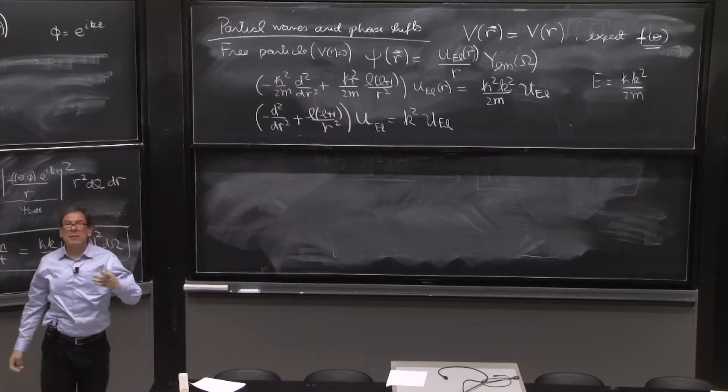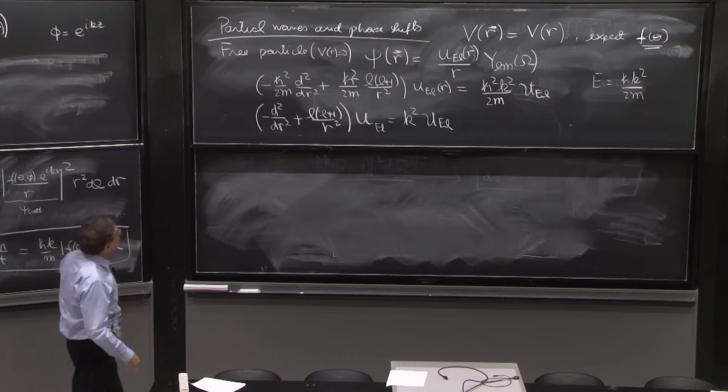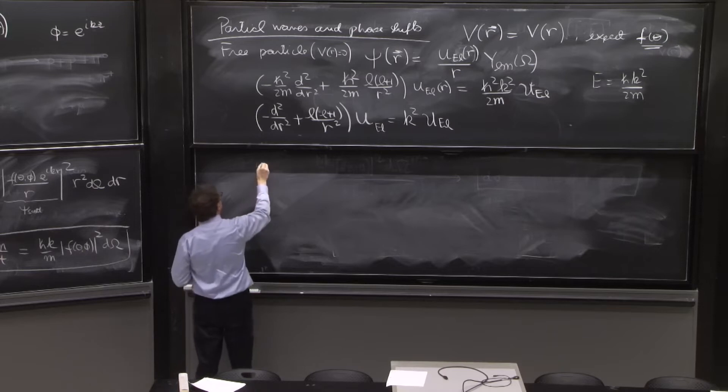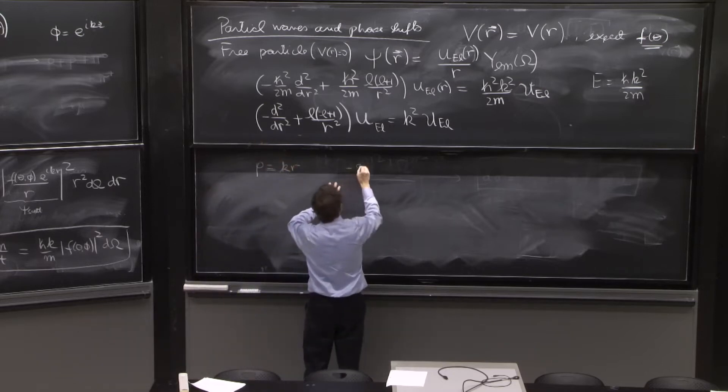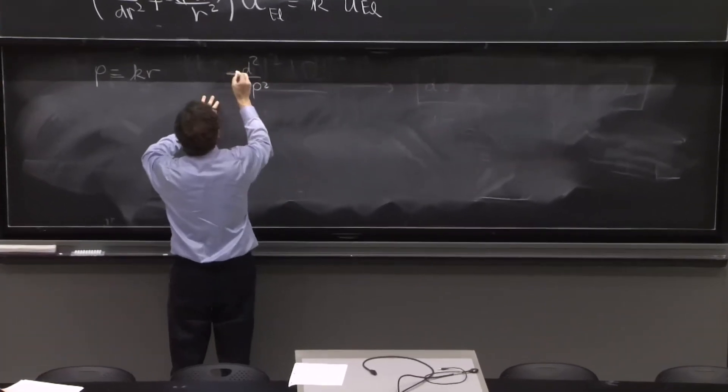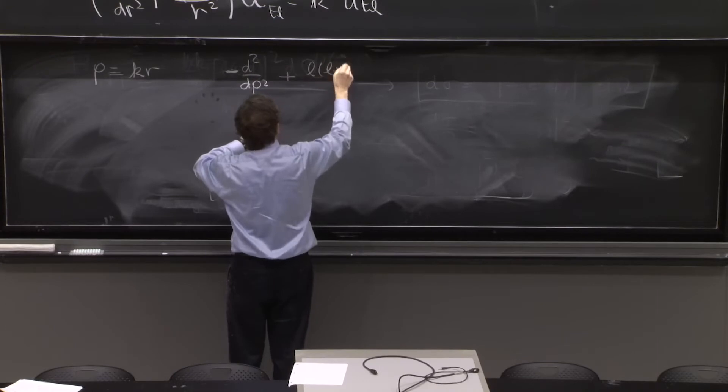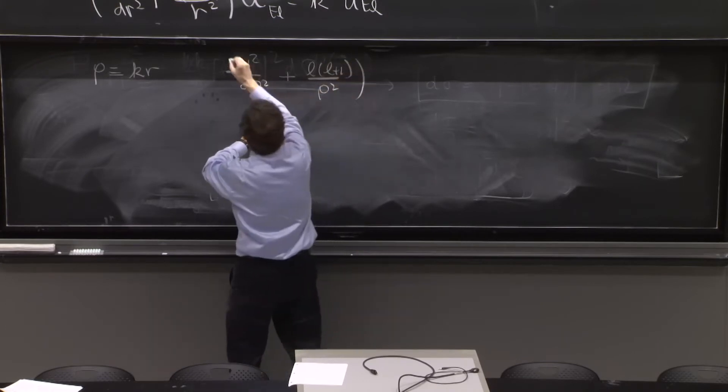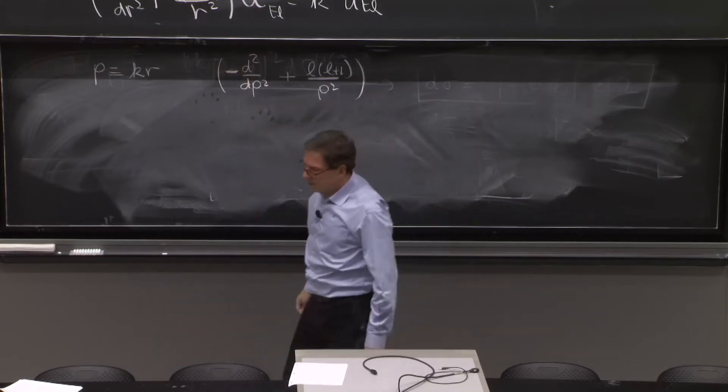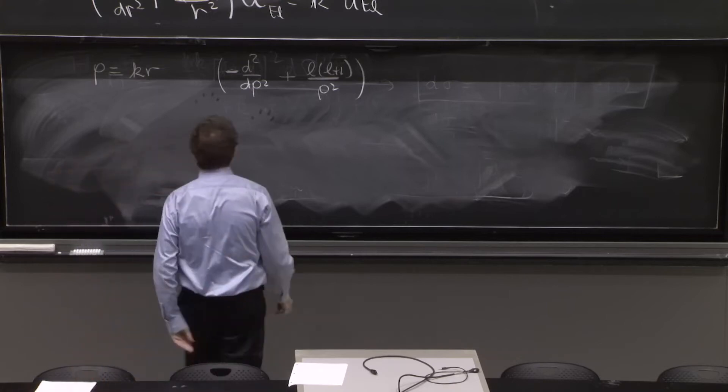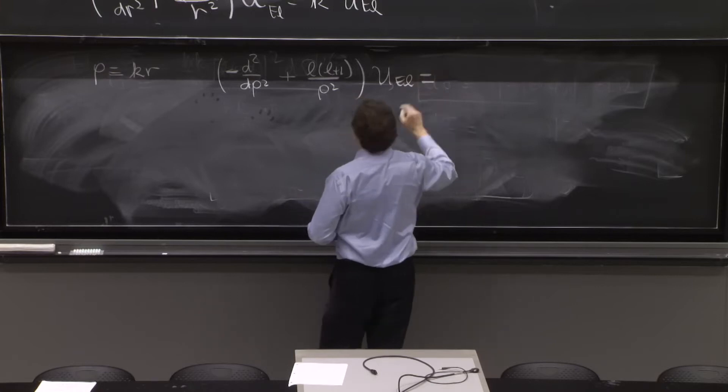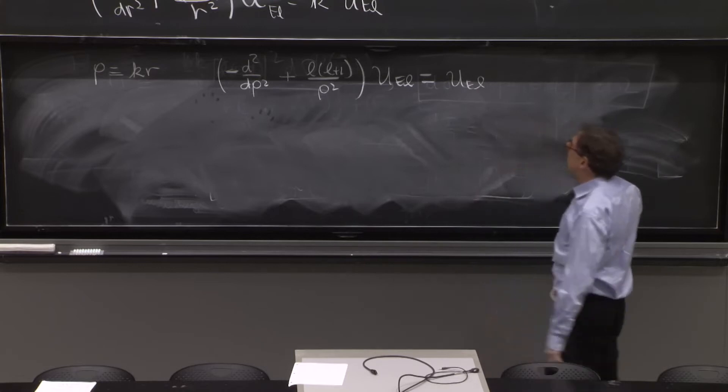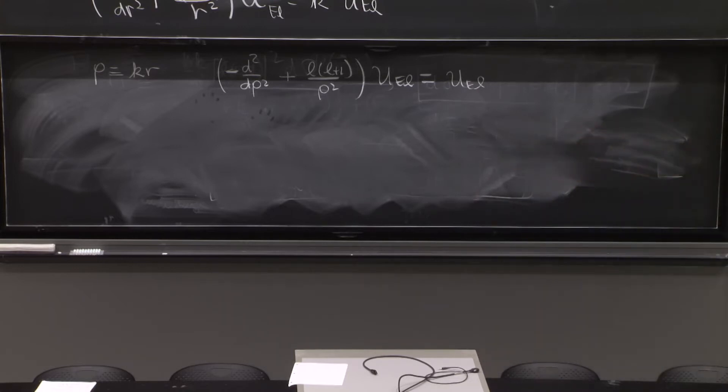This is an r squared here. And the reason you can see, one reason, at least analytically, that there's no quantization is that you can define a new variable, rho equal kr. And then this whole differential equation becomes minus d second d rho squared, plus l times l plus 1 over rho squared, u_el is equal to u_el. And the k squared disappeared completely. That tells you that the k squared cannot get quantized. If there is a solution of this differential equation, it holds for all values of k.